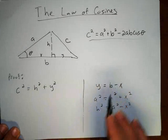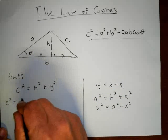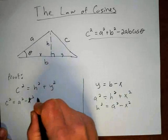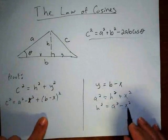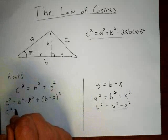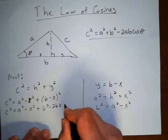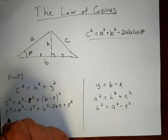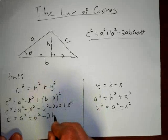Now I can substitute: in for H squared I put A squared minus X squared, and in for Y I put B minus X. So C squared equals A squared minus X squared plus the quantity B minus X, all squared. Expanding: C squared equals A squared minus X squared plus B squared minus 2BX plus X squared. The X squared terms cancel, leaving C squared equals A squared plus B squared minus 2BX.